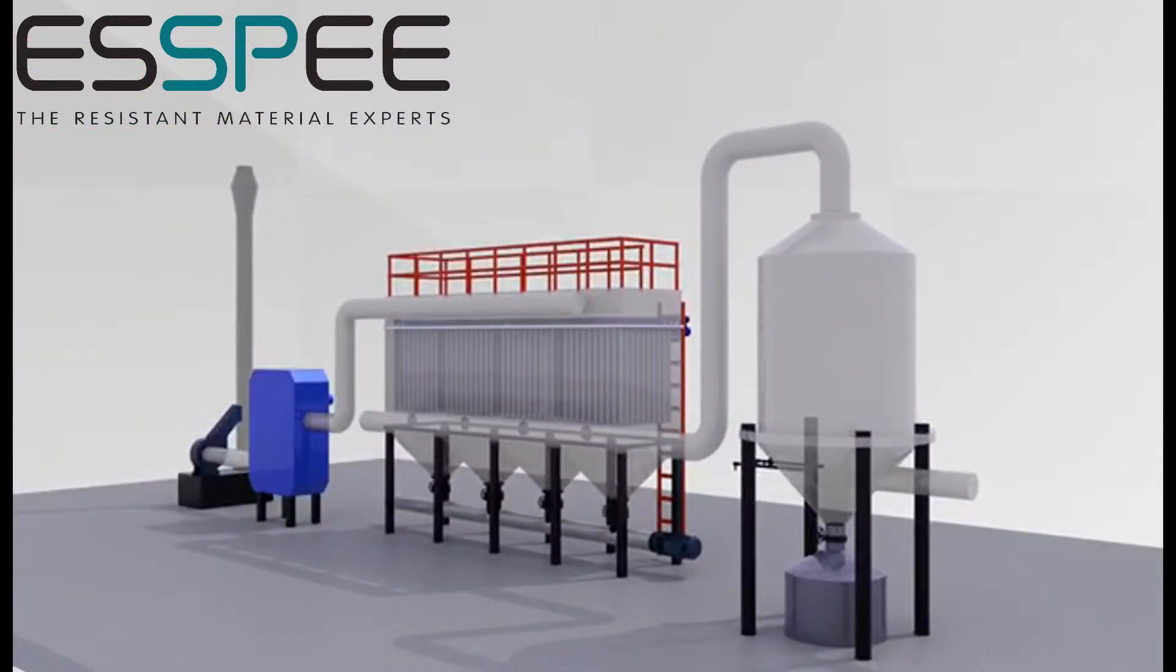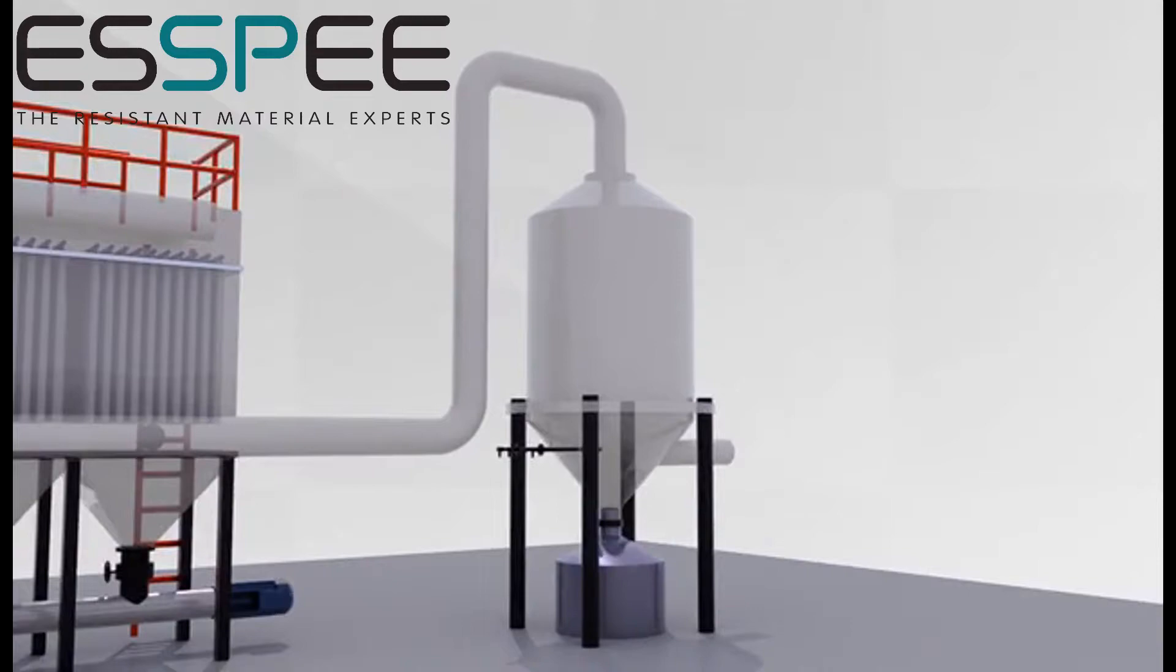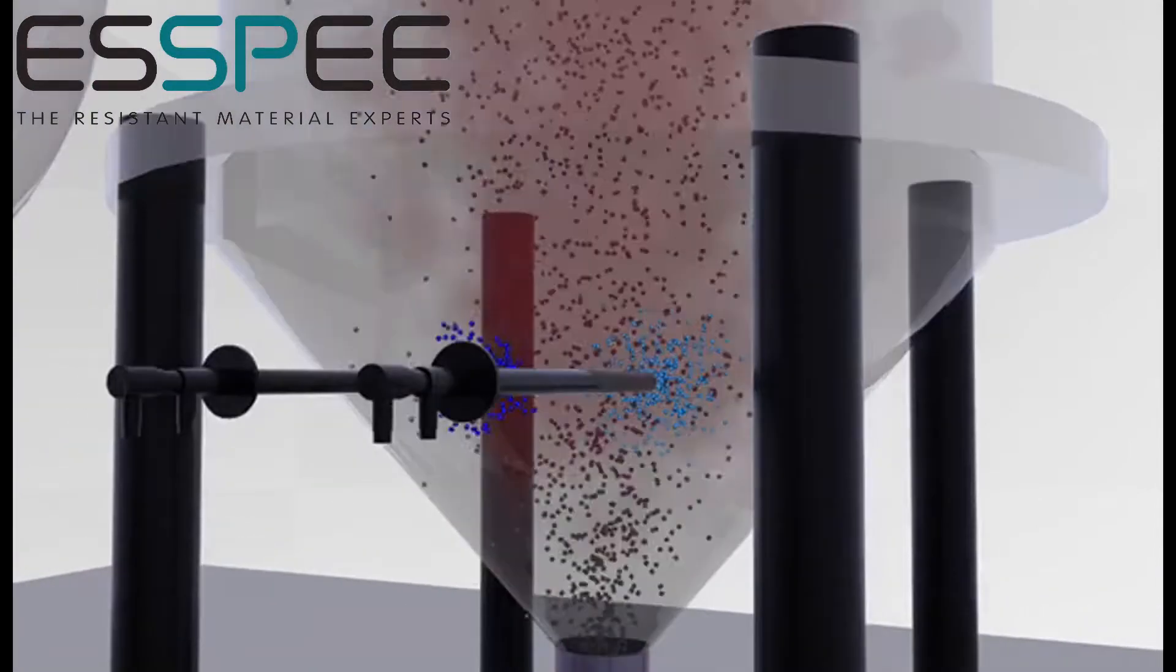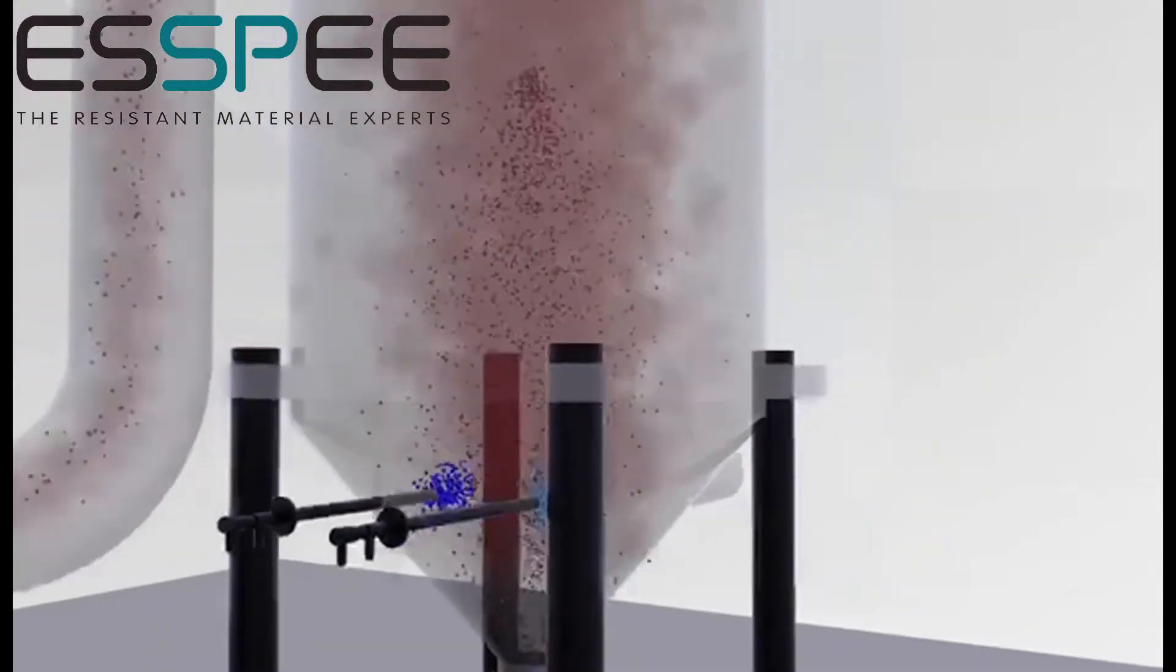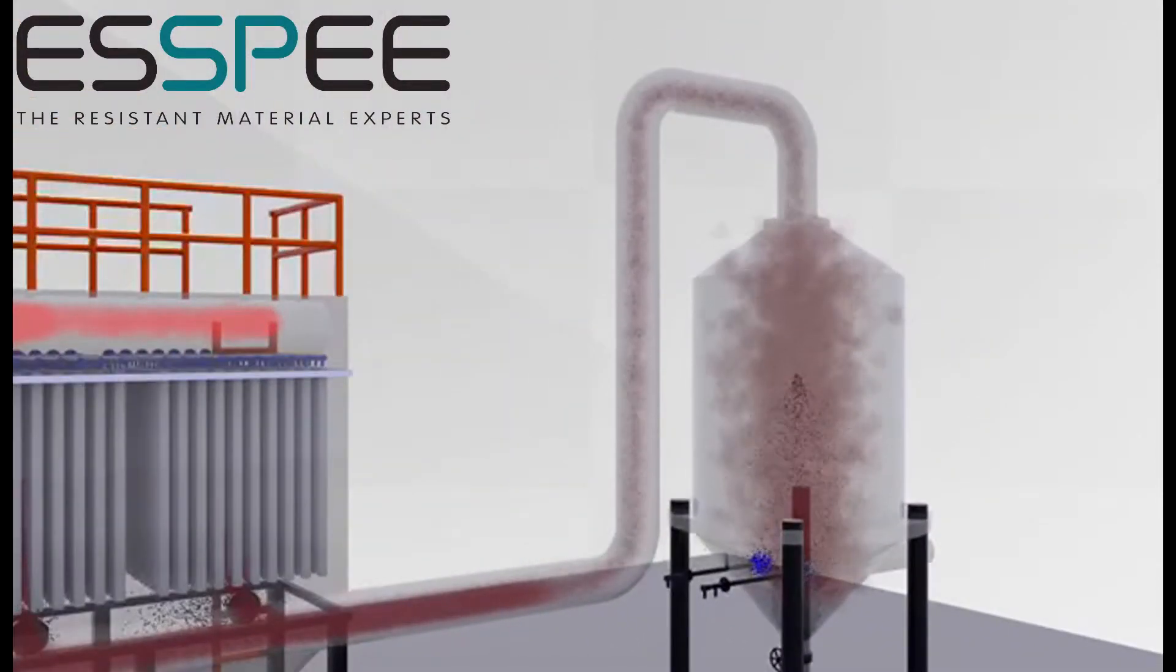The agent neutralizes the acid to generate particulate matter, which is intercepted by the filter. By the action of the auxiliary agent, nitrate and catalyst in the filter are catalytically cracked into nitrogen and water.